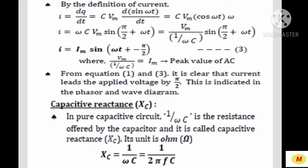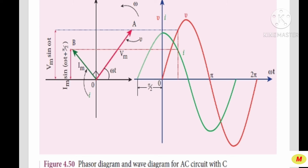Therefore i = Im · sin(ωt + π/2), where Im = Vm/(1/ωC) represents the peak value of the current AC. From equations 1 and 3, it is clear that the current leads the applied voltage by the angle π/2, which is 90 degrees. This is indicated in the phasor and wave diagram.